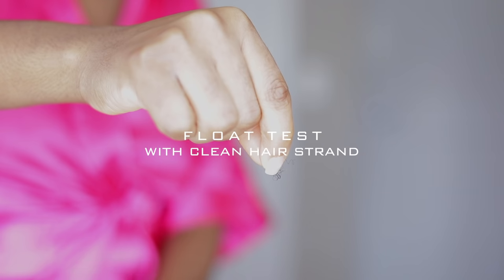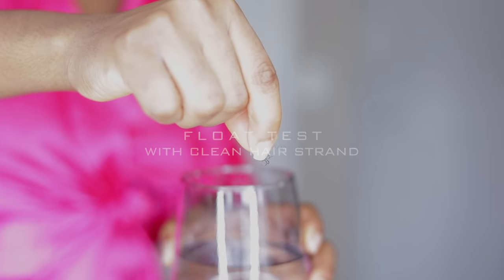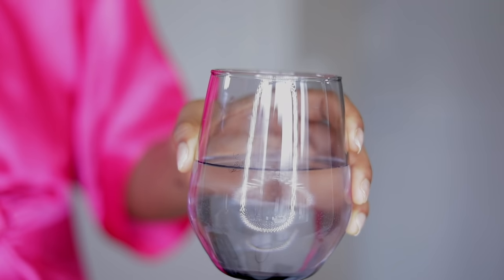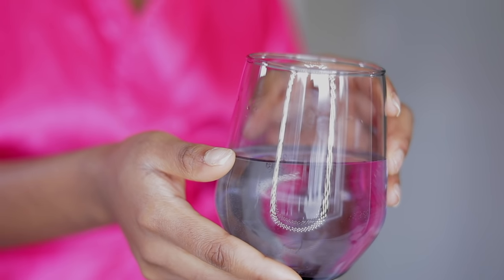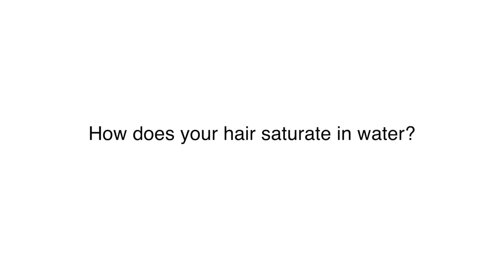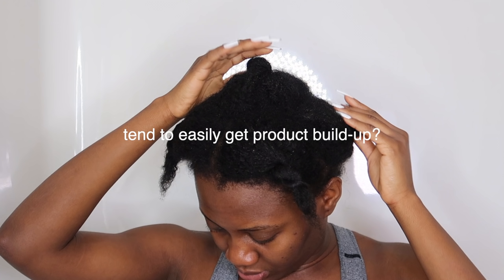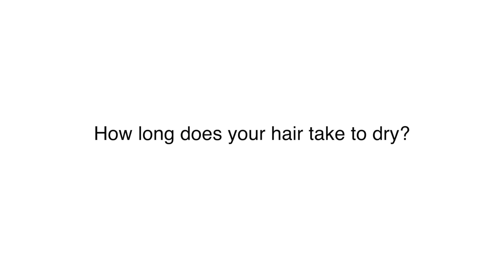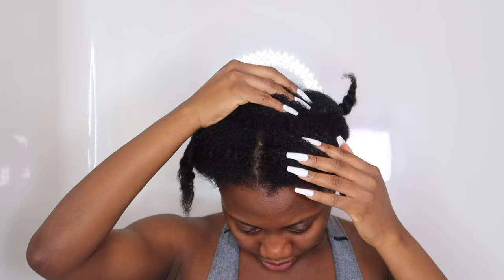These are things I've learned over time, so now I'm sharing that with y'all so we can all learn together. A couple of ways you can determine the porosity of your hair: you can use the float test. However, you want to make sure that the strand of hair you're using is quite clean so you don't alter the results. If your hair stays floating at the top of the water then you most likely have low porosity hair. If it goes halfway through the glass then you most likely have normal porosity hair. If it sinks all the way down after five minutes then you most likely have high porosity hair. Also look at how your hair saturates in water — if it takes a while for water to penetrate and absorb into your hair then you most likely have low porosity hair. Also, if you do tend to get product buildup like me, or if your hair tends to take so long to dry like your twist-out or braid-out, then you also most likely have low porosity hair.